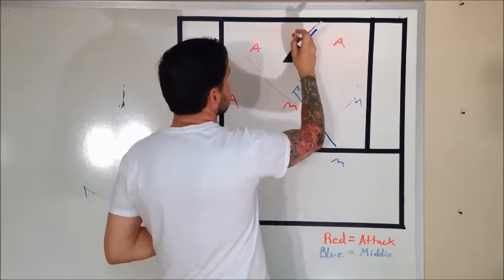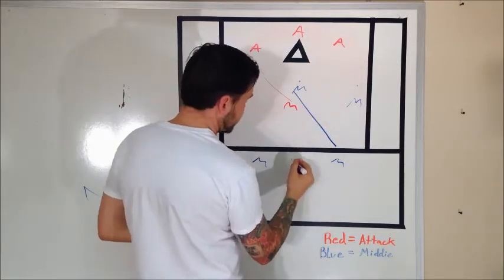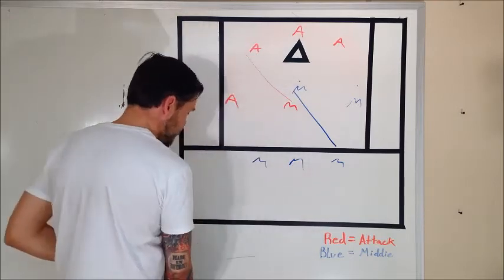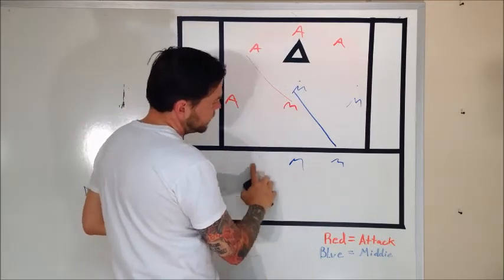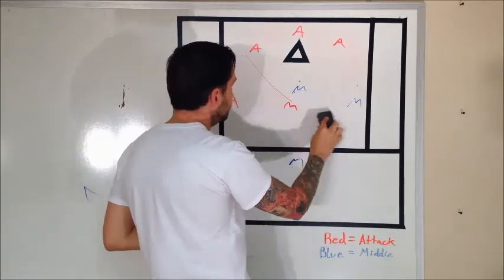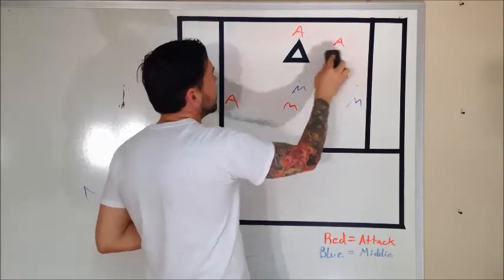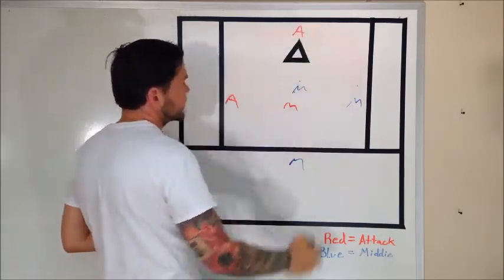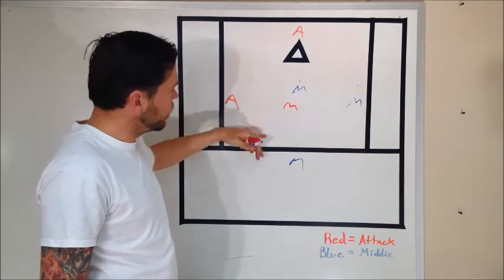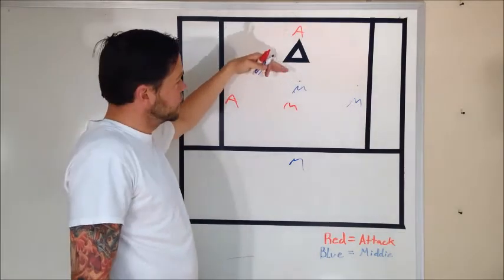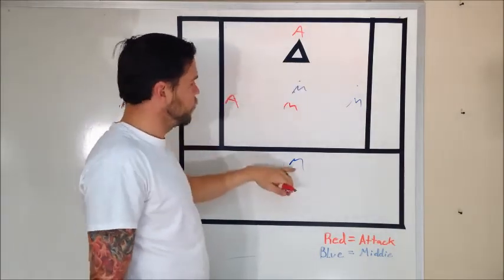the middies are just going to go to center. So the attackman pops back to X, this middie just moves over, and this attackman just goes back to X, creating our one-four-one. So we've got one guy at X, four guys across the middle, one guy up top.